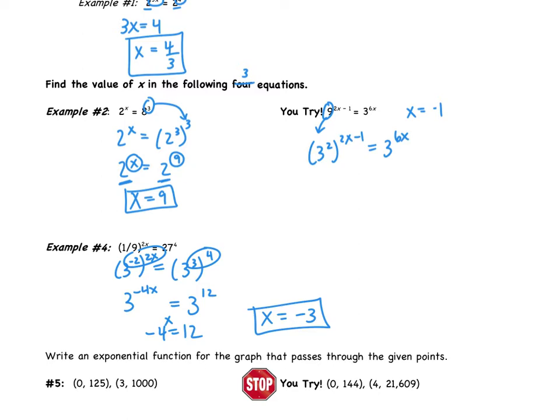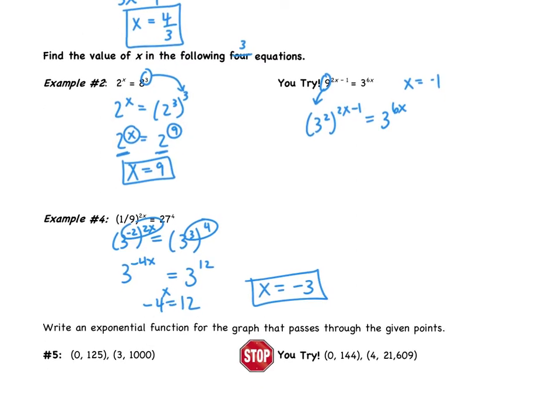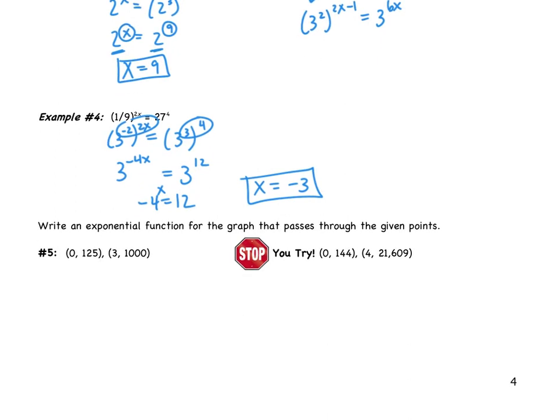So that's the first skill that we were learning from today's video. Second one is writing an exponential function. So write an exponential function for the graph that passes through the given points. General equation that we're going to use is y = a·b^x. So we're going to write y = a·b^x. We need to find both a and b. Our answer is going to be a function that has x and y, but we do need to find the values of a and b.